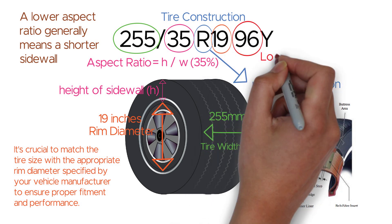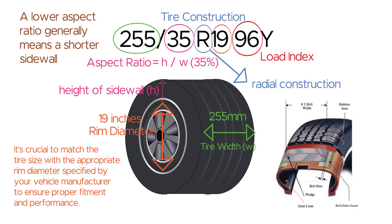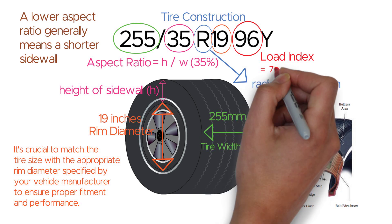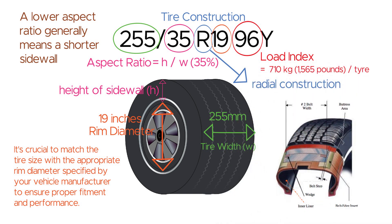The number 96 is the load index. It is a numerical code that represents the maximum load capacity of the tire when properly inflated and under maximum load. Each load index corresponds to a specific maximum load capacity, which can be found in load index charts provided by tire manufacturers. In this example, a load index of 96 indicates a maximum load of 710 kg, which is 1,565 pounds, per tire.